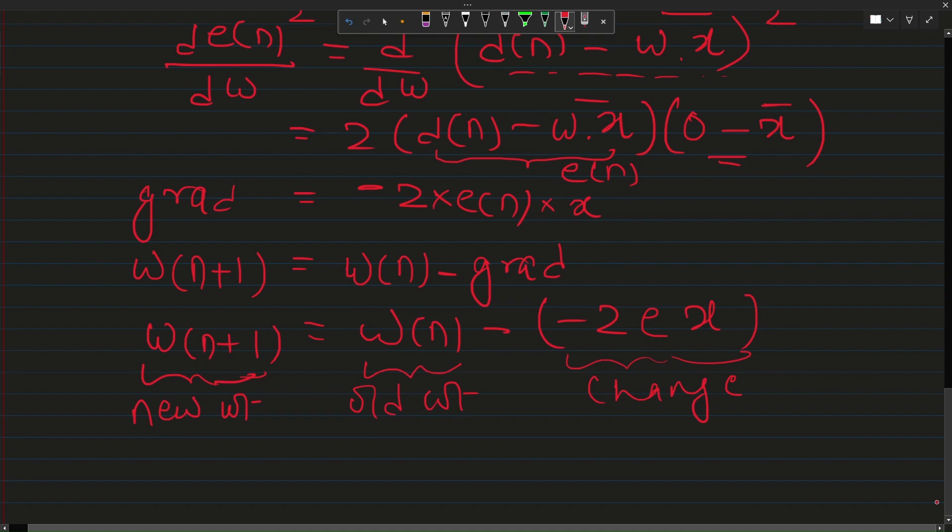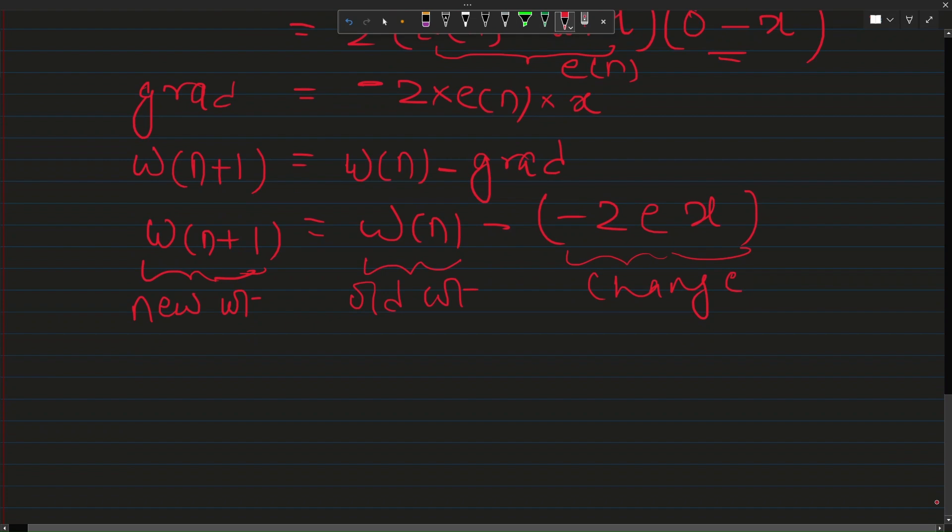We do not apply this entire change all at once because the filter becomes unstable. We want filter to change slowly and retain stability. Instead of applying this complete error all at once, we multiply it by a small number called mu which is also known as learning rate. This number is generally a very small number like 0.01 or 0.001. This decides how quickly or slowly this whole filter converges.